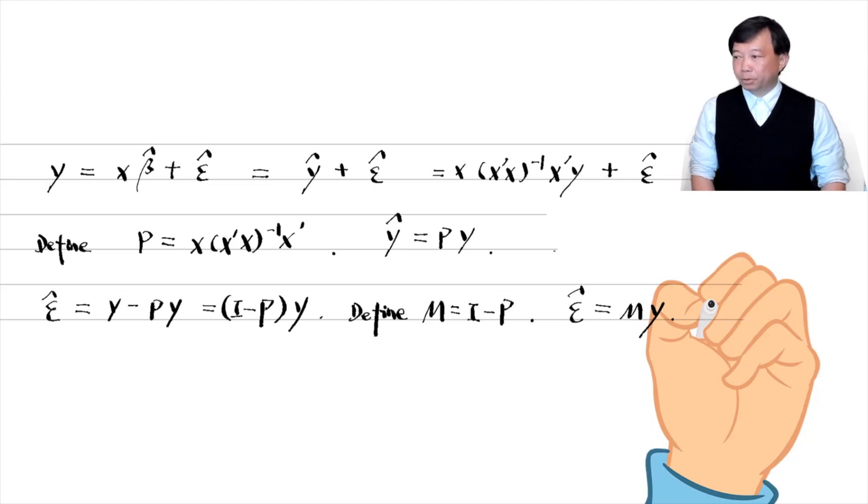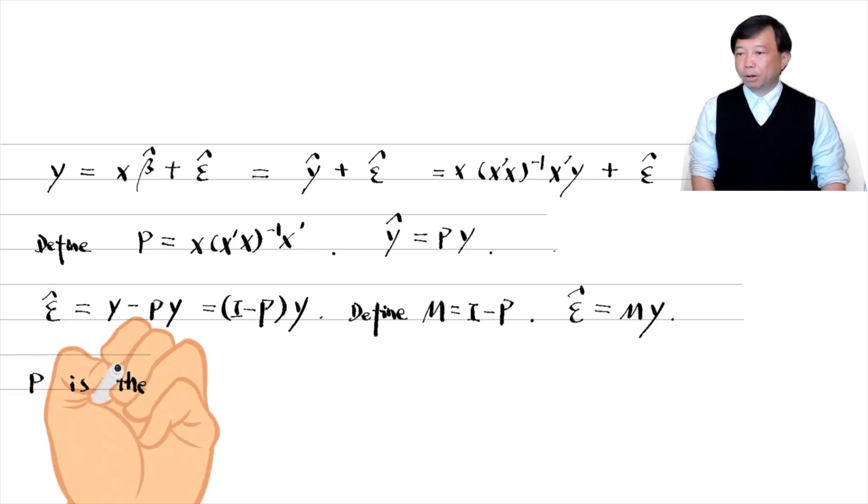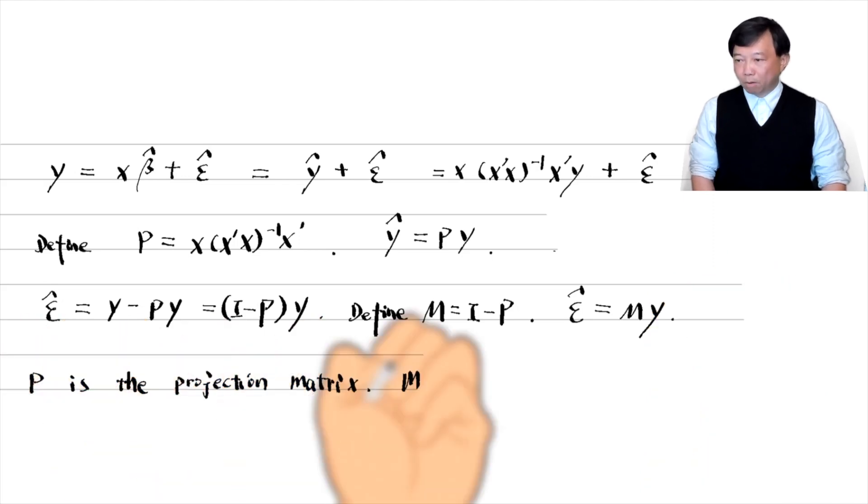P is called the projection matrix. Because when the outcome variable y is pre multiplied by P, the result is the fitted values in the OLS regression of y on x. It is also the projection of the vector y into the column space of x.